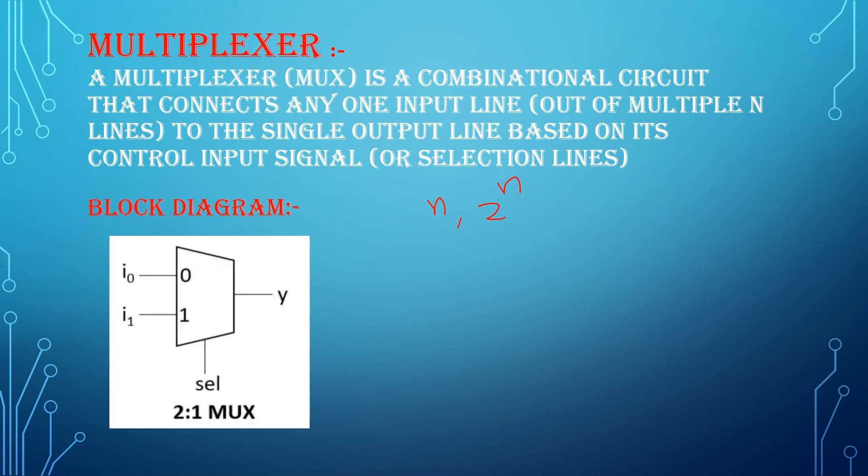So here n determines the number of selection lines. So we can write it as 2 power n is to 1.